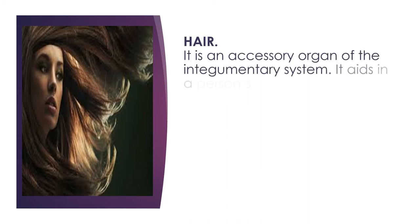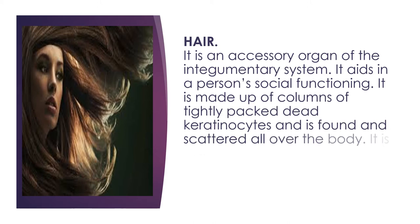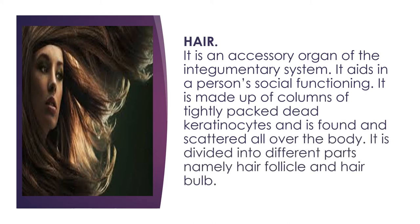Hair is an accessory organ of the integumentary system. It aids in a person's social functioning. It is made up of columns of tightly packed dead keratinocytes and is found scattered all over the body. Hair is divided into different parts namely the hair follicle and hair bulb. Hair is made up of keratin and grows from the hair root within the hair follicle embedded in the skin. It extends through the epidermis and protrudes from the skin. Most of the hair is dead and keratinized.